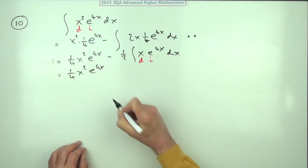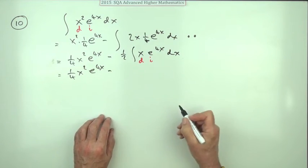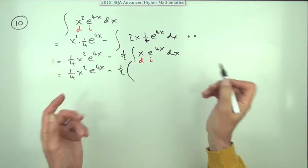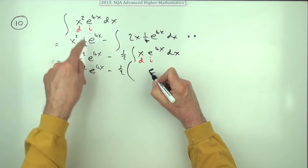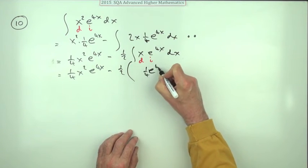One quarter e to the 4x. Those wee ditto marks would have been handy. Minus a half of, now just do this again. So what have we got? Integrate first. I've already done it. That was one quarter of e to the 4x.